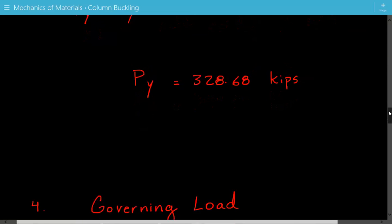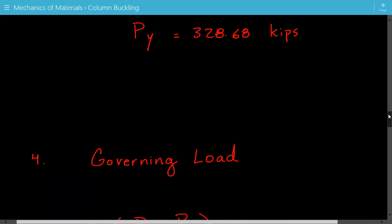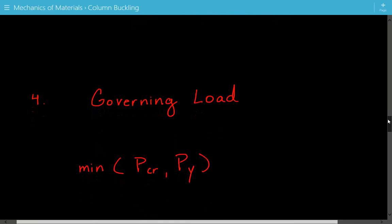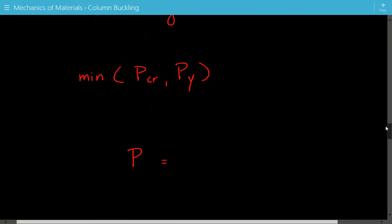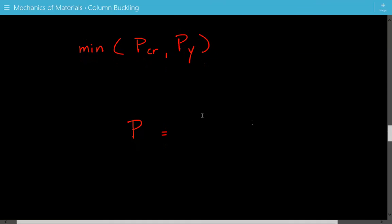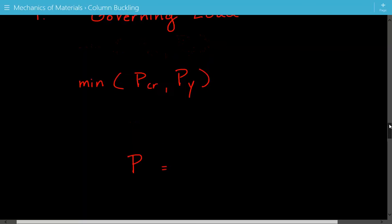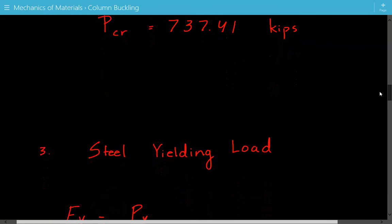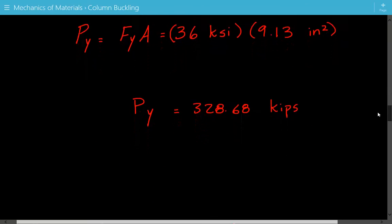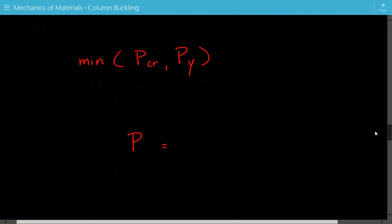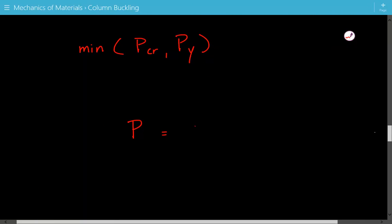Lastly, we're going to get the governing load by comparing the critical buckling load and the steel yielding load. The minimum of these values will be the governing load for our case. The critical buckling load is 737.41 kips and the yielding load is 328.68 kips. Py is smaller, so this is our governing load: 328.68 kips.